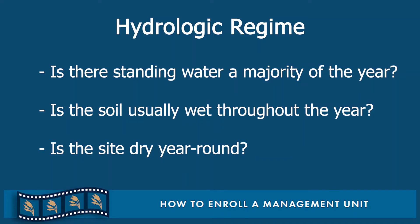You'll also need to take note of your management unit's hydrologic regime. Does the entire site contain standing water for the majority of the year? Is there not typically standing water but the soil is usually wet throughout the year? Or is the site fairly dry year-round? Now take note of your management unit's habitat type. Select all the options that seem appropriate given your knowledge of the management unit.